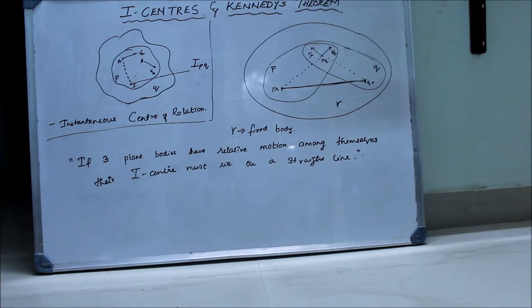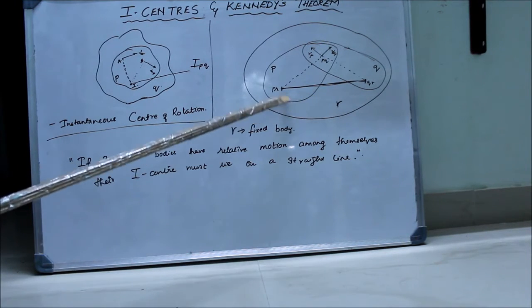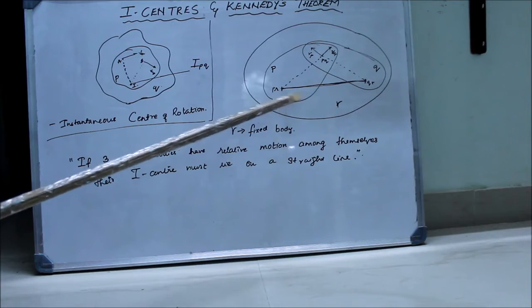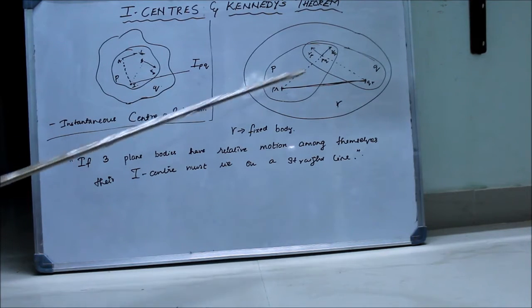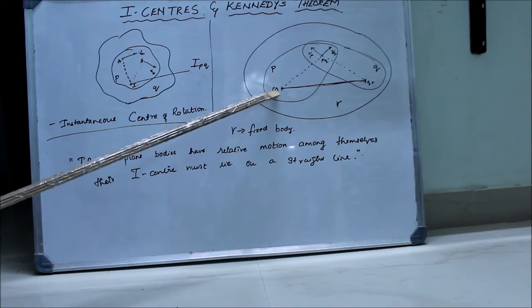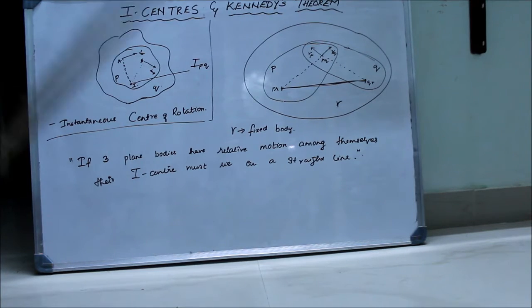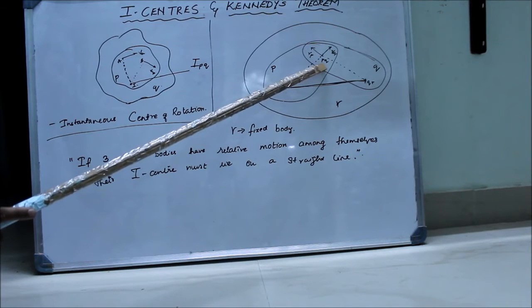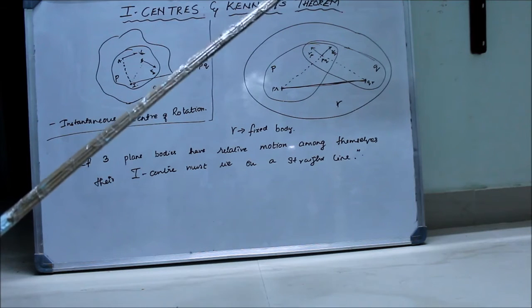Let us consider three plane bodies P, Q, and R, in which R is a fixed body. So R is not moving; P and Q are moving. P is moving with respect to R at point PR, and Q is moving with respect to R at point QR. So PR and QR are the I-centers of these two bodies, named in increasing alphabetical order. This point PQ is the mutual I-center of the bodies P and Q.